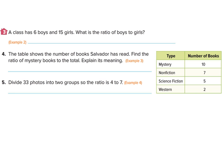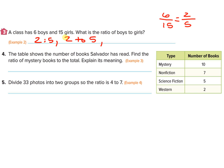So we have another ratio problem here. A class has 6 boys and 15 girls. What is the ratio of boys to girls? I'm going to write it as a fraction: six over 15. Can that simplify? It can — three can go into six two times, and three can go into 15 five times, so it simplifies to two to five. So the three ways are: two colon five, two to five, and two slash five.